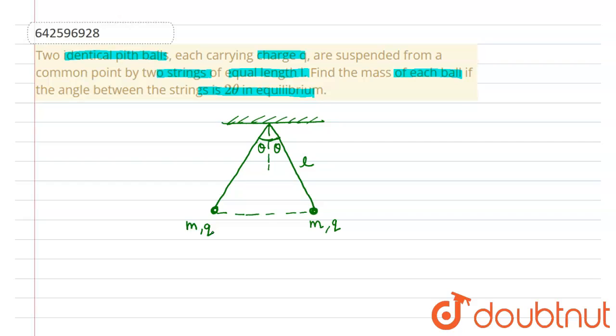Now consider this distance as r. This value of r will be equals to, if this is l, so this becomes l sin θ and this will also be equals to l sin θ. Since you see here, if this is angle θ and this is l, so this will be equals to l sin θ. So r will be equals to 2l sin θ.